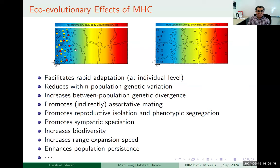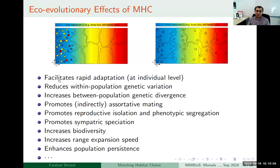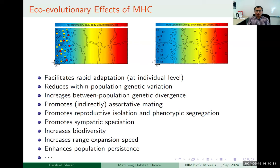Looking at this cartoon, if we consider general genetic factors, matching habitat choice is not as simple as it looks. If individuals are highly mobile and have facilities to assess the environment quickly, matching habitat choice can facilitate rapid adaptation even in a single generation. It significantly reduces within-population genetic variation — initially the variation in a local population is high, but after matching habitat choice each local patch has very low genetic variation — and it increases between-population genetic divergence due to spatial assortment.